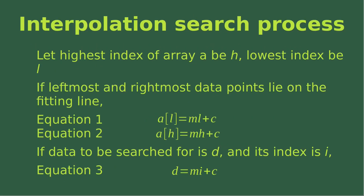Now let us see the real process of the interpolation search. First, we let the highest index of the array a be h, and the lowest index be l. If the leftmost and rightmost data points lie on the fitting line, we can set up two equations — equation 1 and equation 2. These two equations demonstrate the relationship between the index l or h and the element value corresponding to those indices, called a[l] or a[h], joined by the same slope m and y-intercept c. Also, if the data to be searched for is called d and its corresponding index is called i, we can set up equation 3.